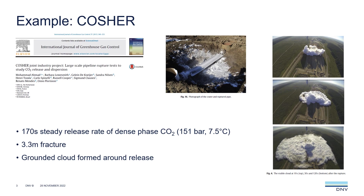We're going to look at a case study from the COSHA JIP, which took place 6-7 years ago, and look at the FAST predictions against one of the rupture experiments. It's a 170-second steady release rate of dense phase CO2 which resulted in a 3.3-metre full bore fracture. On the right-hand side you can see the development of the visible cloud at three separate times: at 10, 30, and 120 seconds after the rupture. A grounded cloud is formed around the crater with significant ground level concentrations.